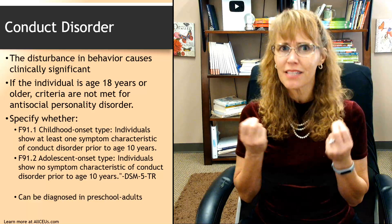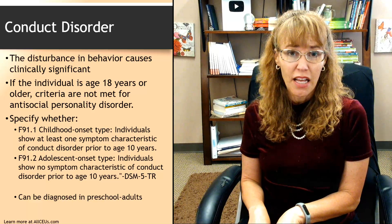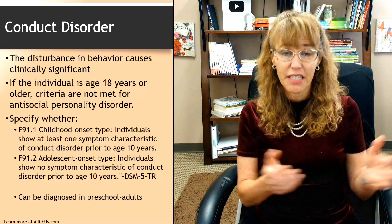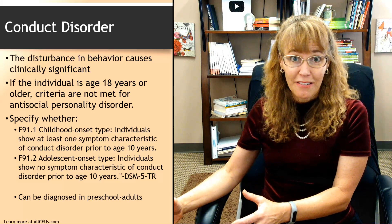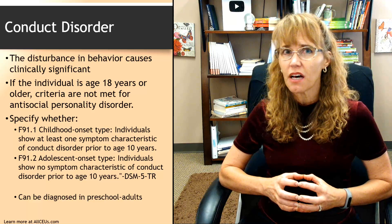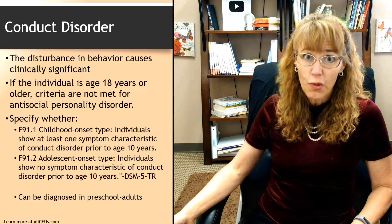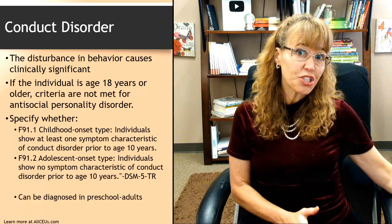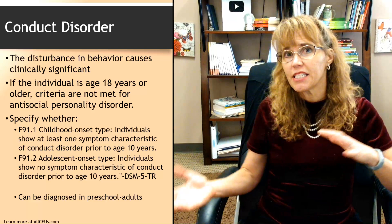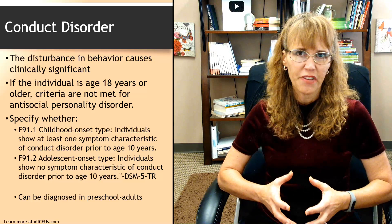If someone was doing well up to age 10 and then suddenly developed conduct disorder, that should prompt the question: what happened to precipitate the development of these behaviors? Conduct disorder can be diagnosed from preschool through adulthood. The symptoms are significantly more severe and more physically aggressive than ODD, and conduct disorder is often preceded by ODD but not always.